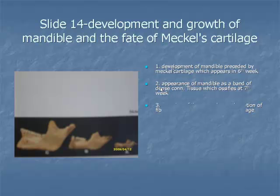Item 3: The ramus — that is, the vertical mandible — is first mapped out by condensation of fibrous tissue far away from the cartilage. But its further development is associated with spread of ossification from the body and by the appearance of three secondary cartilages, the most important of which is the condylar cartilage. These cartilages appear between the 10th and 14th week.